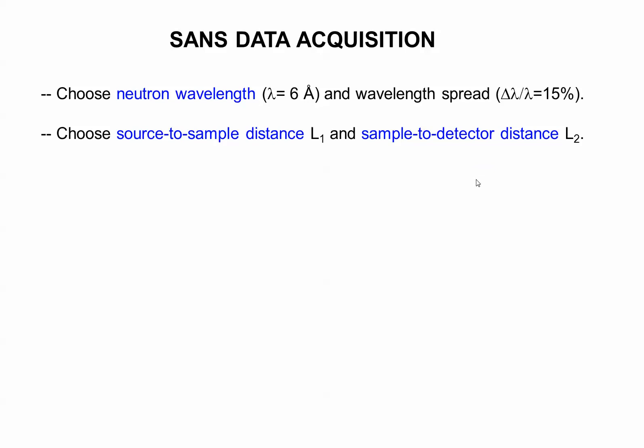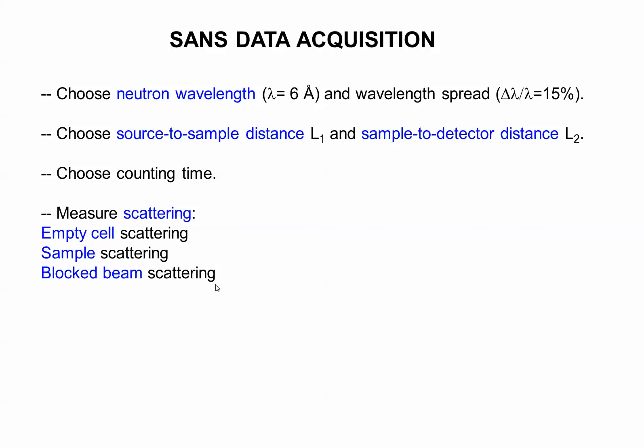We choose the source to sample and sample detector distances, low Q and high Q, two configurations, and one in between intermediate Q. We'll be saving three configurations for you. Choose the counting time, order between, for example, five minutes at high Q to like 30 minutes or 45 minutes at low Q.